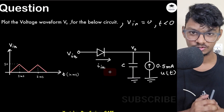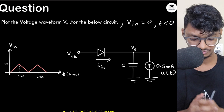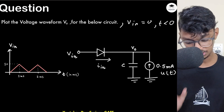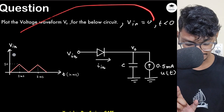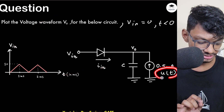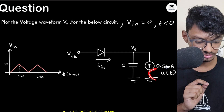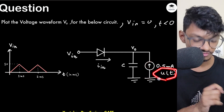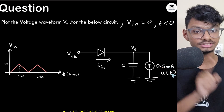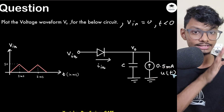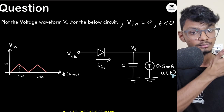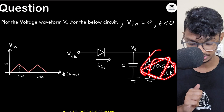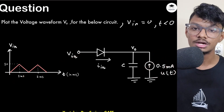Hey everyone, welcome back to my channel. I'm Anish and today we'll solve the continuation of the previous homework question. In the previous lecture I solved the same question but with a small change — u(t) was not there. Without u(t), the source was always constant 0.5 mA. With u(t) present, the signal equals 1 at t ≥ 0 and equals 0 before t < 0, so nothing is present before t = 0.